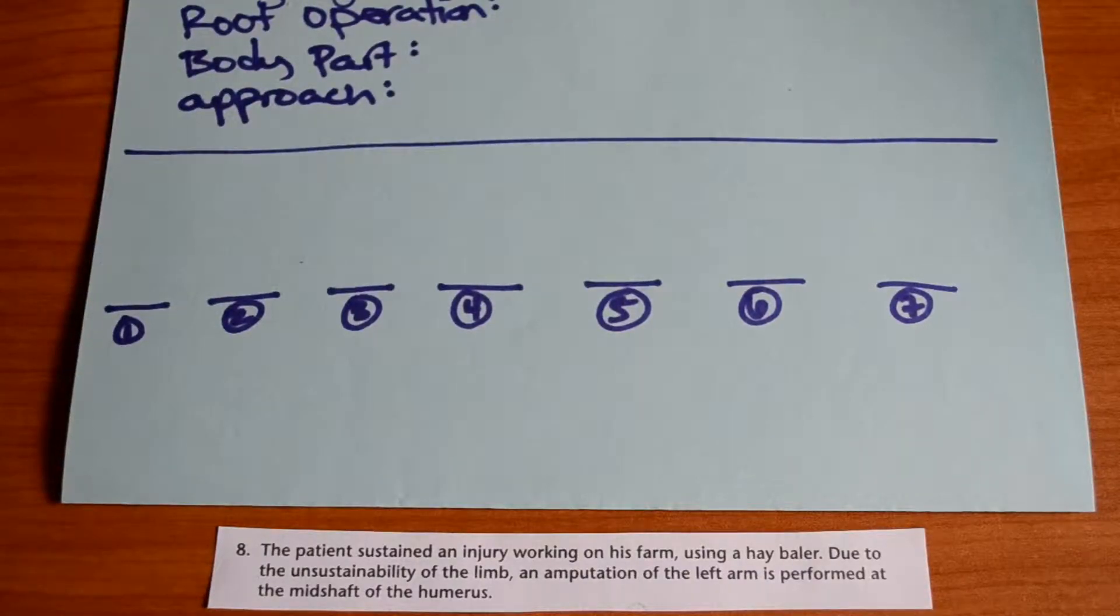Okay, so down here we have our procedure. Now, with the exercises in my PCS practice book, they give very short and to the point procedures for detachment because they don't have a lot of information in the procedures. They're quite simple, so we'll be using this short version. So it says, the patient sustained an injury working on his farm using a hay baler. Due to the unsustainability of the limb, an amputation of the left arm is performed at the mid-shaft.